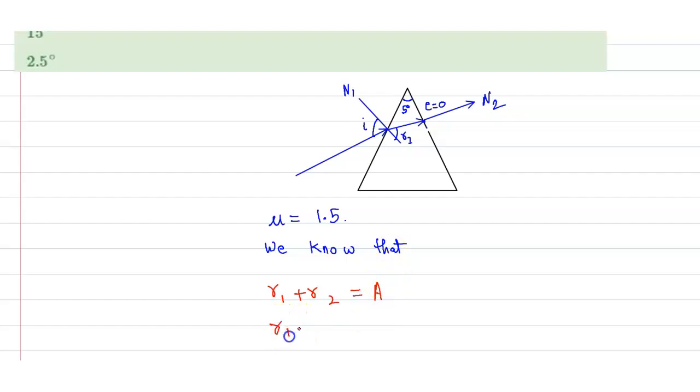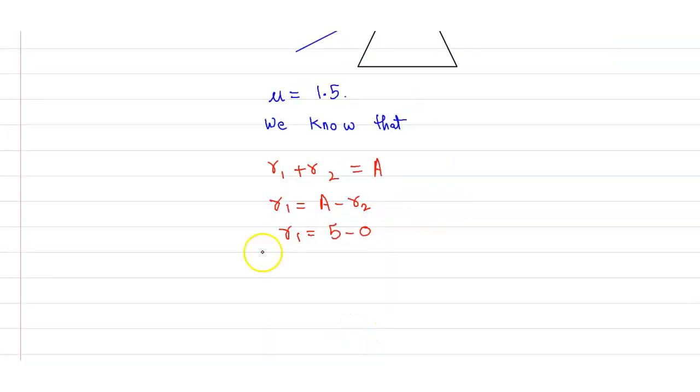From here we can say r1 is equal to A minus r2. And r1 then from here will become 5 minus 0, because r2 is at the normal, so e is equal to 0 and r2 is also 0. So from here our r1 becomes 5 degrees.